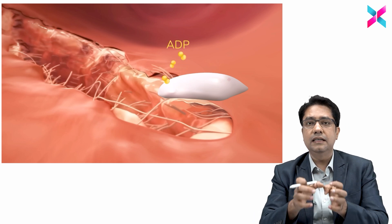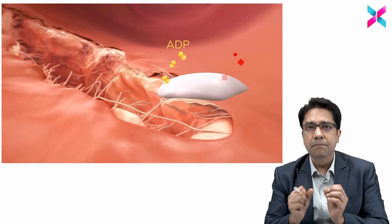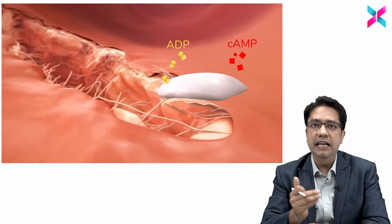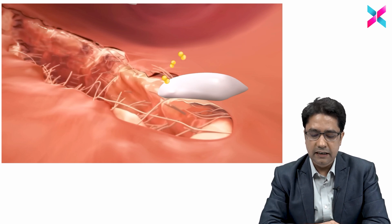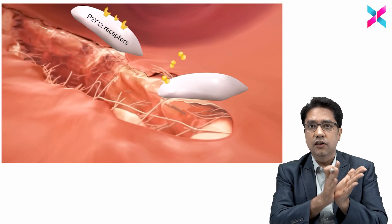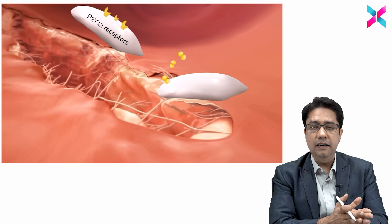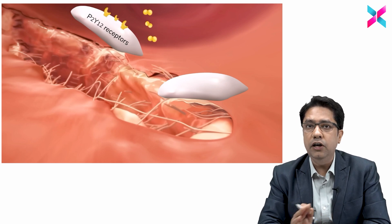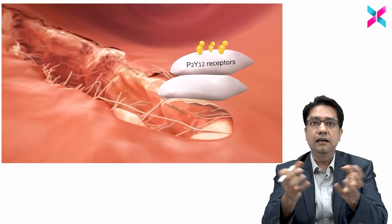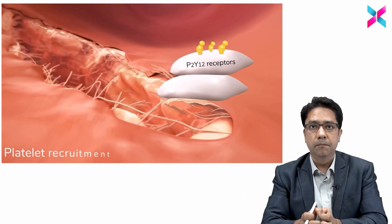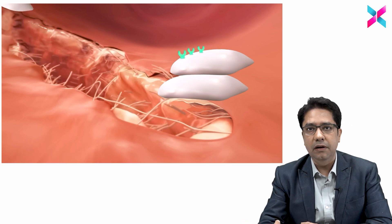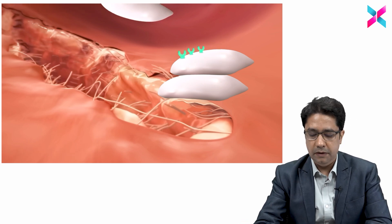When the platelets are attached, they release a molecule known as ADP — adenosine diphosphate. This ADP acts on other platelets via the P2Y12 receptor, a purine receptor, which causes platelet recruitment. However, we have an opposing molecule, cyclic AMP, which inhibits recruitment.